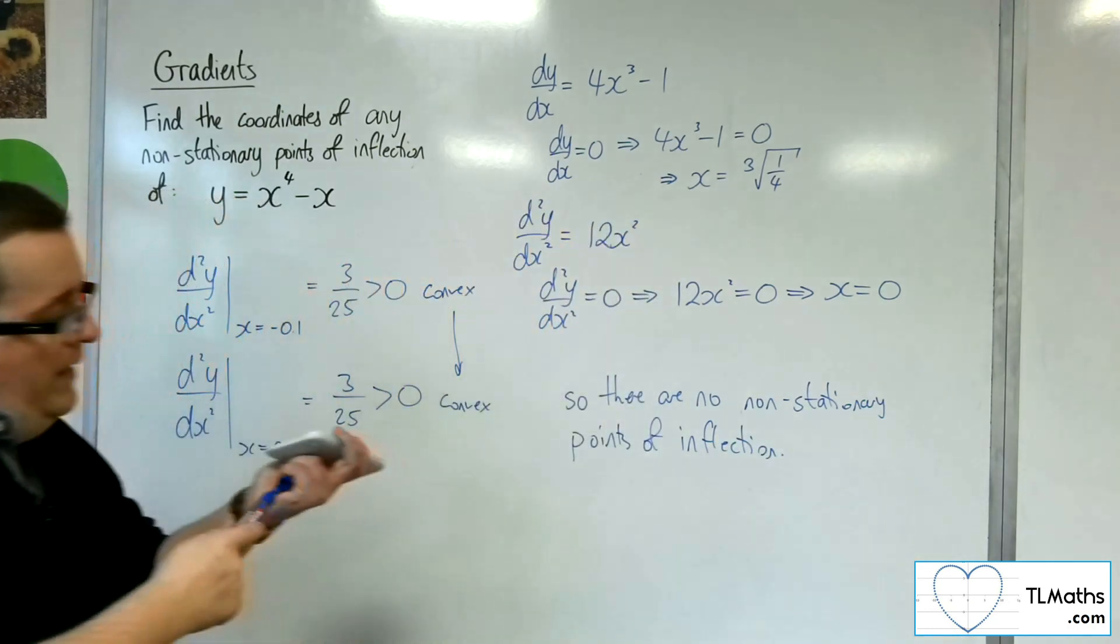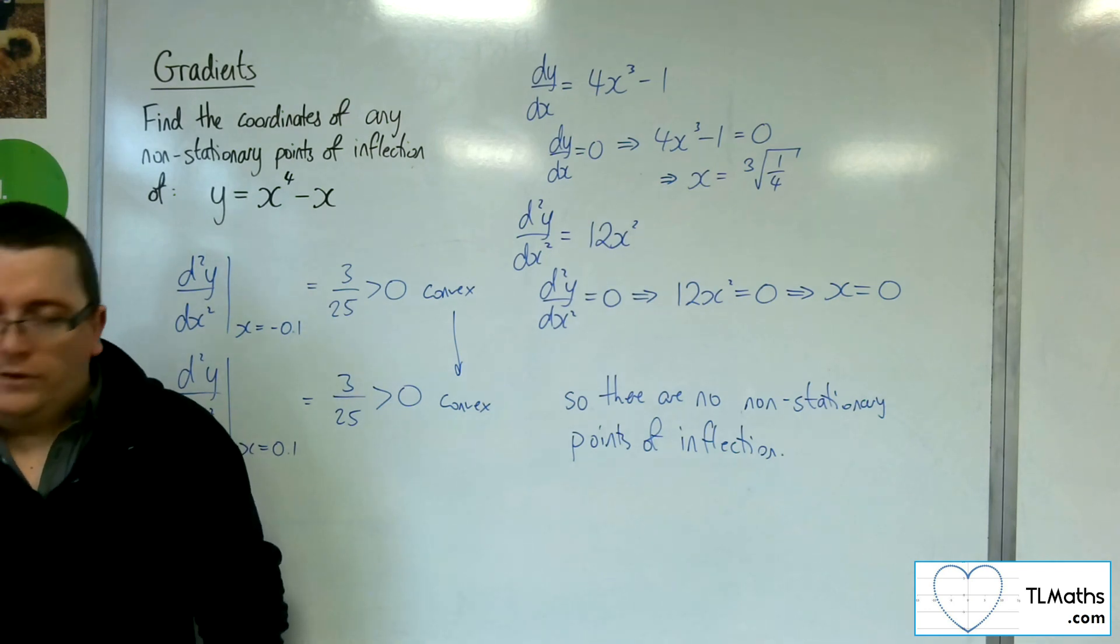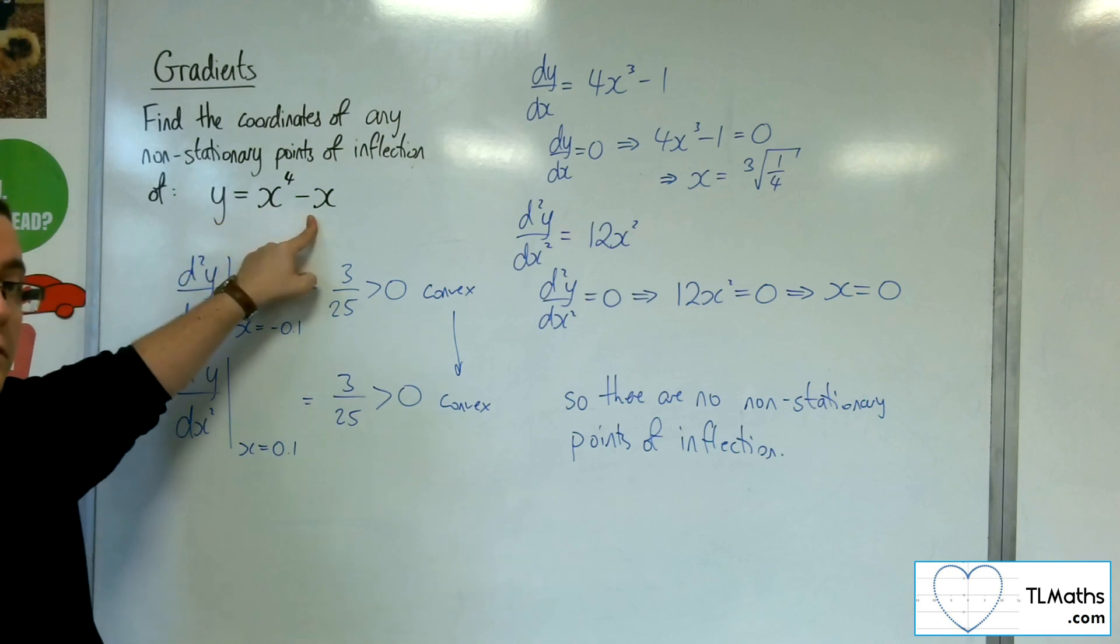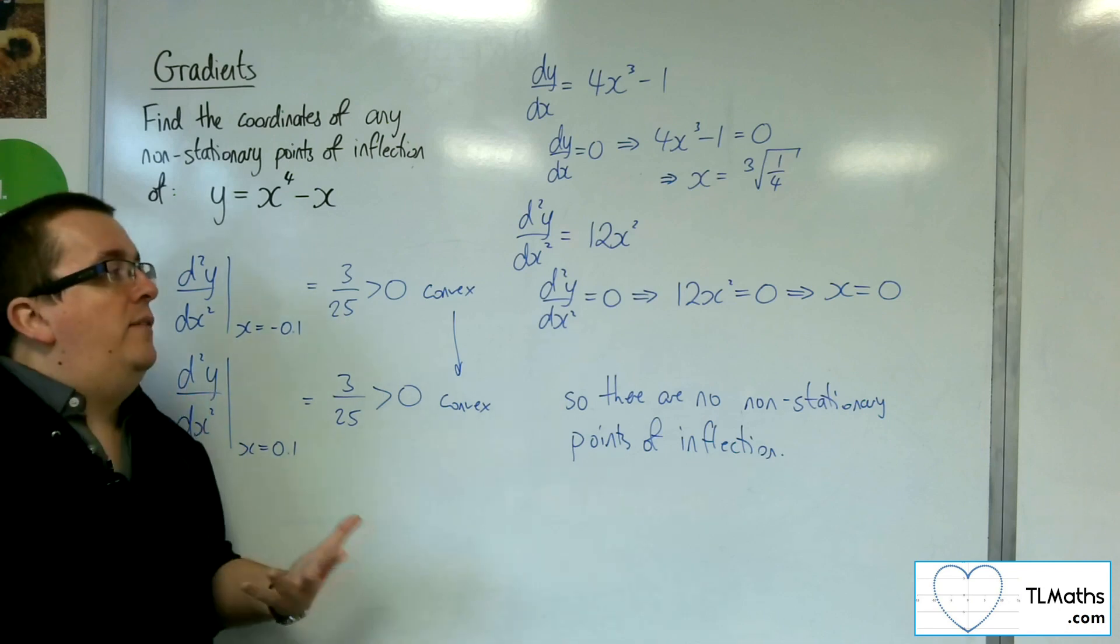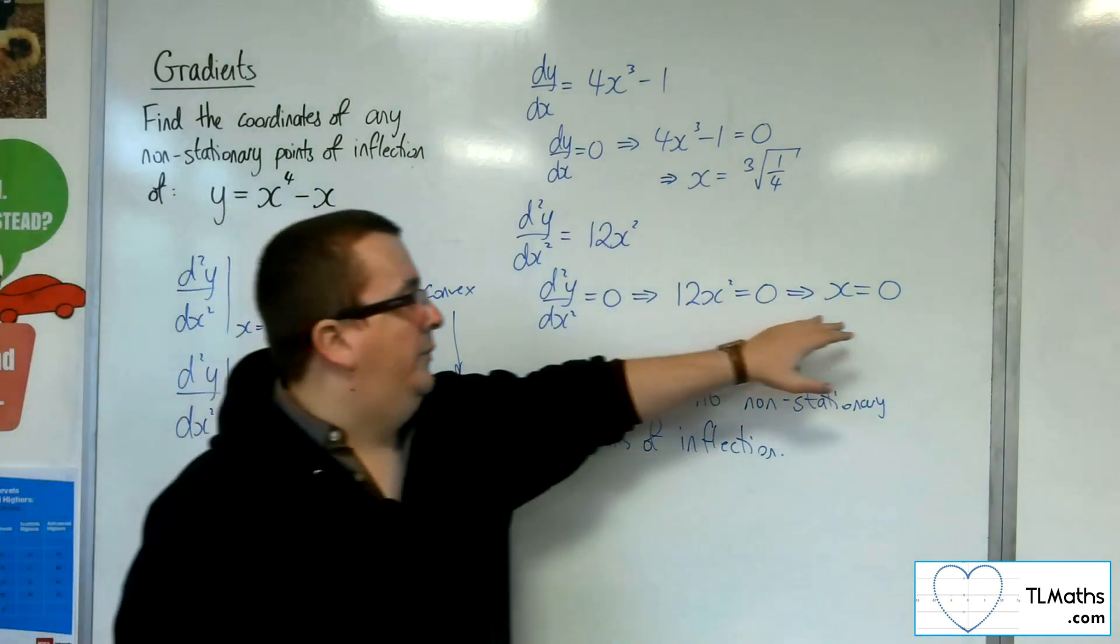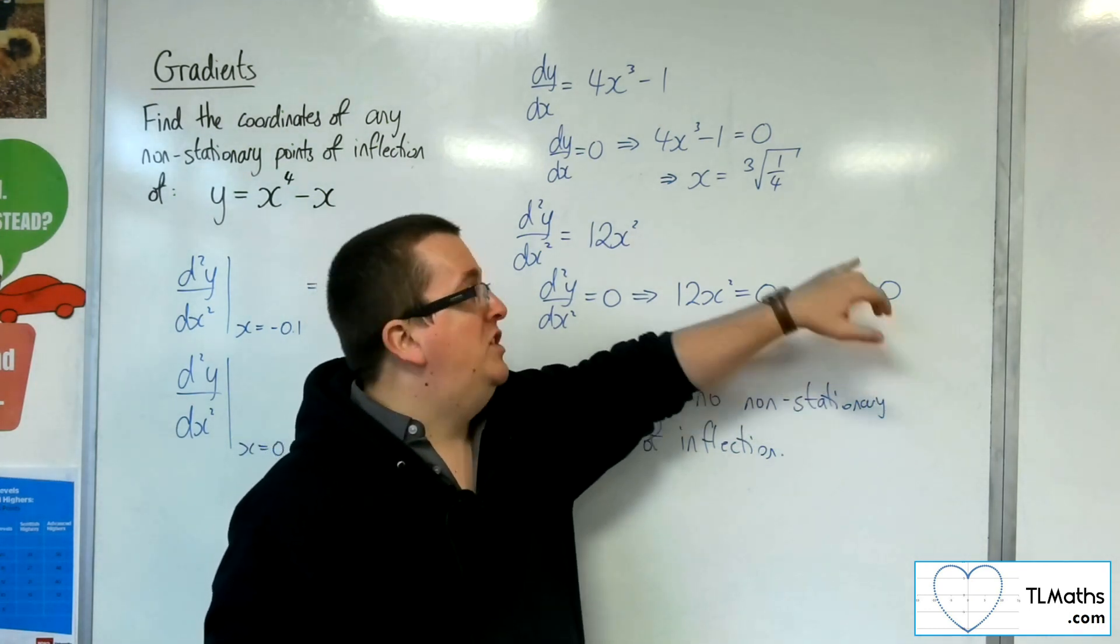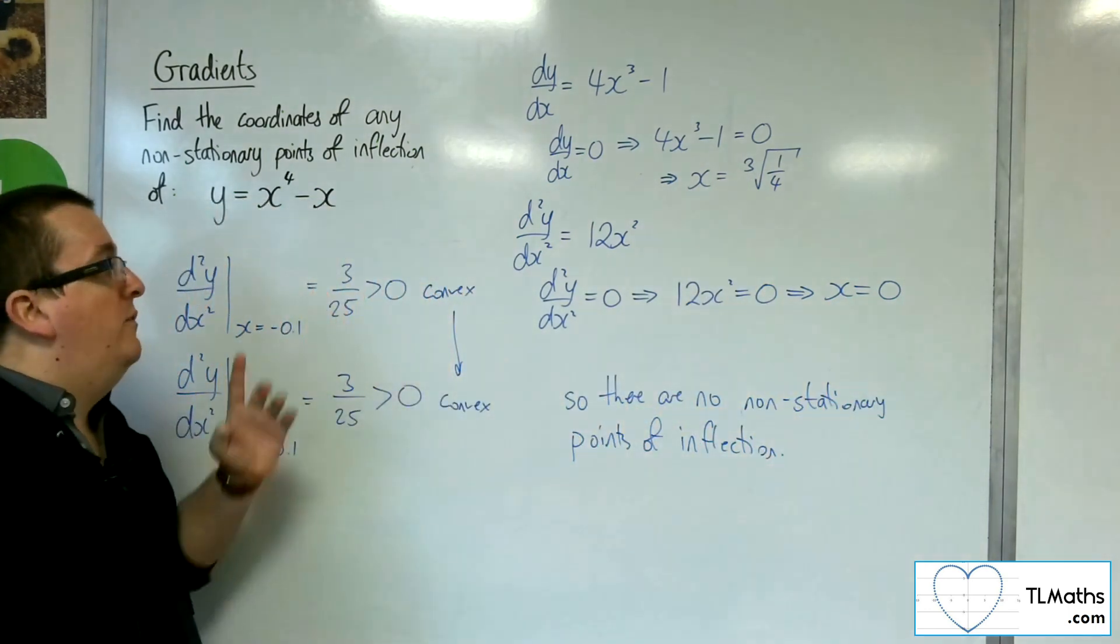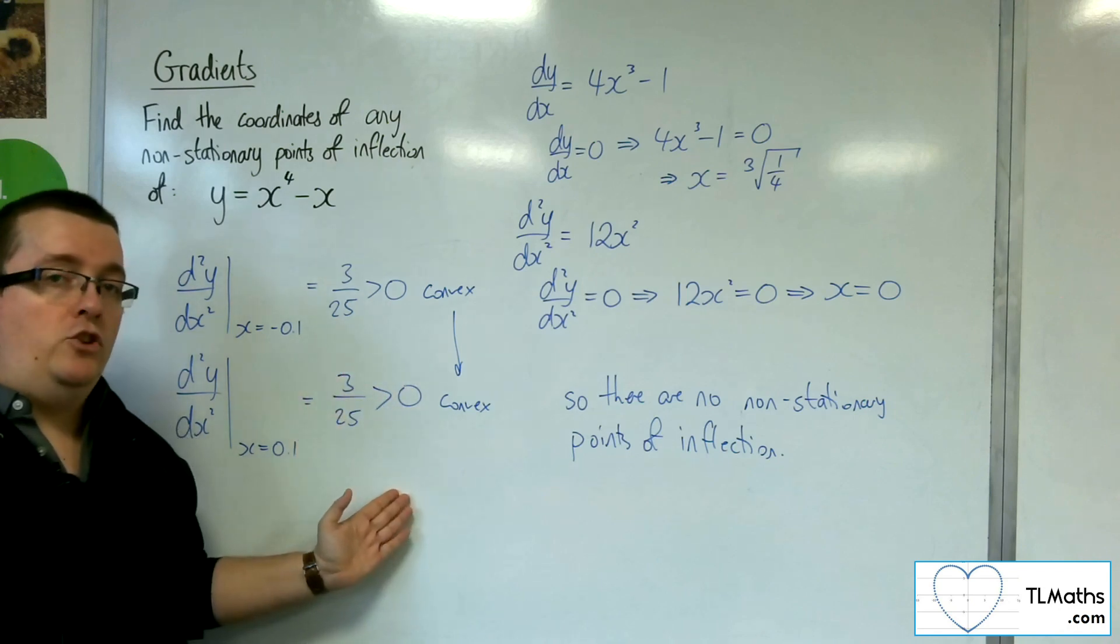This is a very important example, because it's a very basic curve that has the interesting property that actually, although it looks as if there is going to be a non-stationary point of inflection, because you get a solution to the second derivative which is not a stationary point, but it's not a point of inflection because the sign of the second derivative does not change.